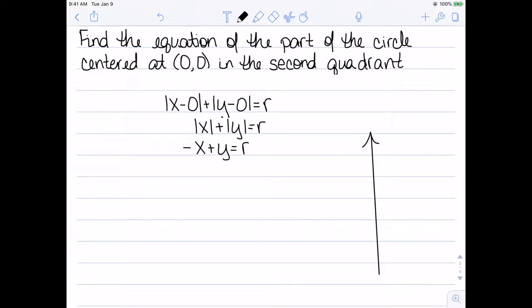If we were to actually have our coordinate plane, this would look like a line segment with positive slope that actually intersects at 0, r and negative r, 0.